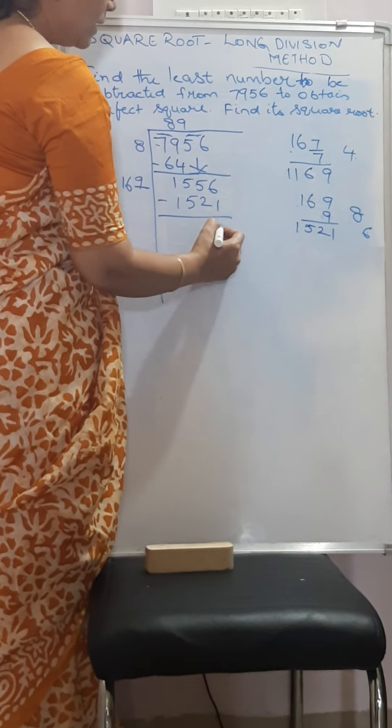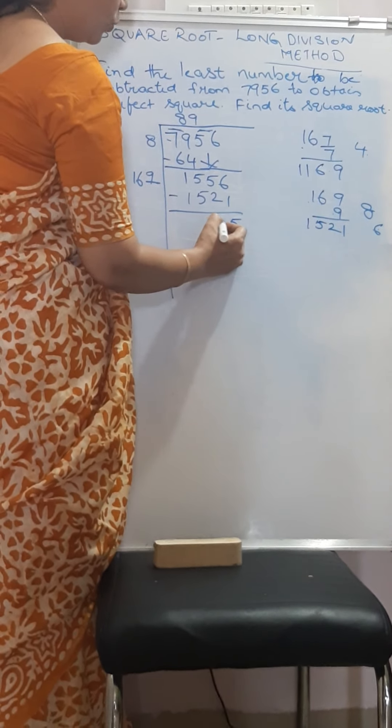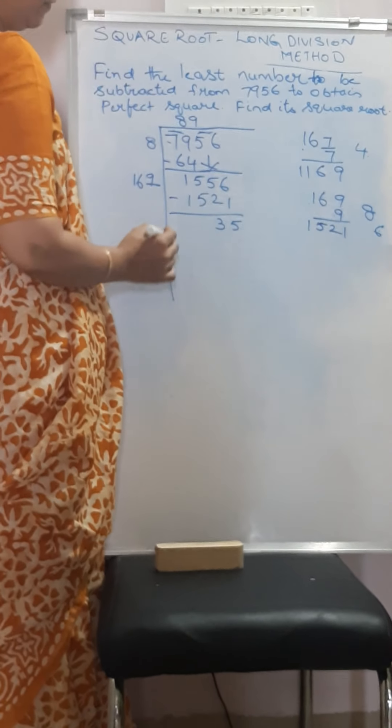So 6 minus 1 is 5, 5 minus 2 is 3. Now 35 is the remainder. We don't have any other numbers.